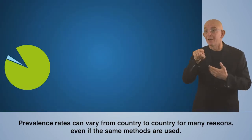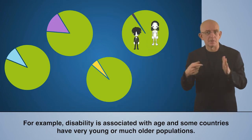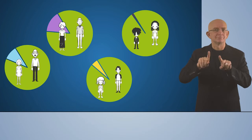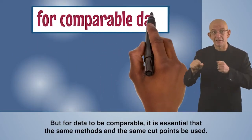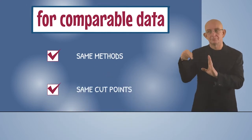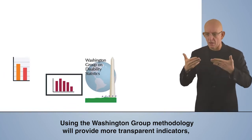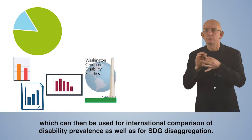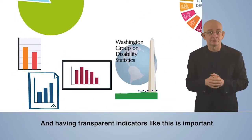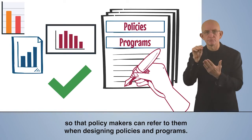Prevalence rates can vary from country to country for many reasons, even if the same methods are used. For example, disability is associated with age, and some countries have very young or much older populations. But for data to be comparable, it is essential that the same methods and the same cut-points be used. Using the Washington Group methodology will provide more transparent indicators, which can then be used for international comparison of disability prevalence, as well as for SDG disaggregation. Having transparent indicators like this is important so that policymakers can refer to them when designing policies and programs.